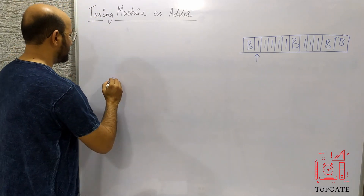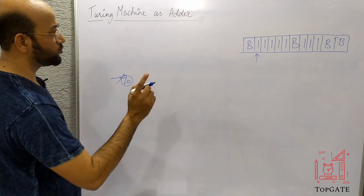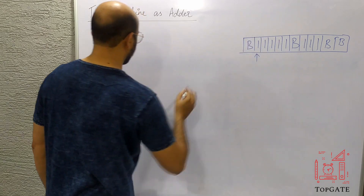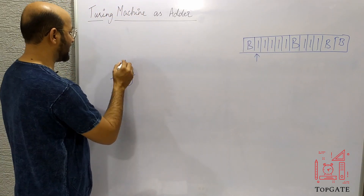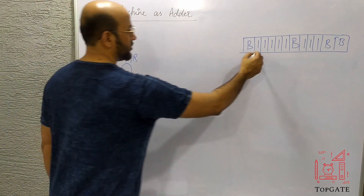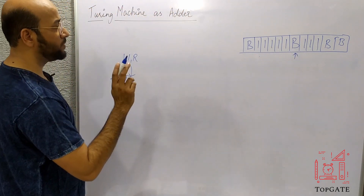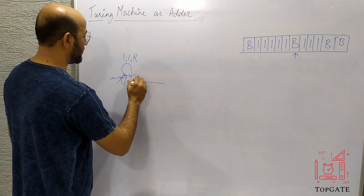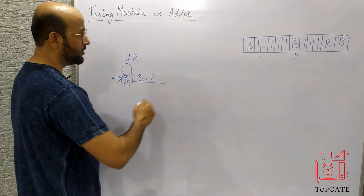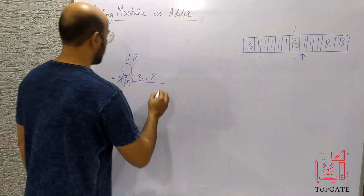Starting at initial state q0, we are reading a one. We skip it — take a self-loop: if you find one, keep it as one and go right. All the ones are skipped and the pointer reaches the separator B. Now change this B to one and go right, moving to state q1.